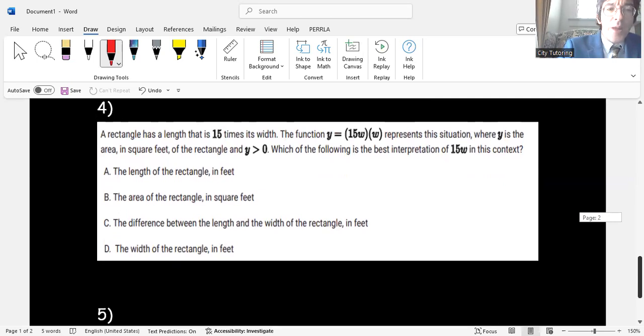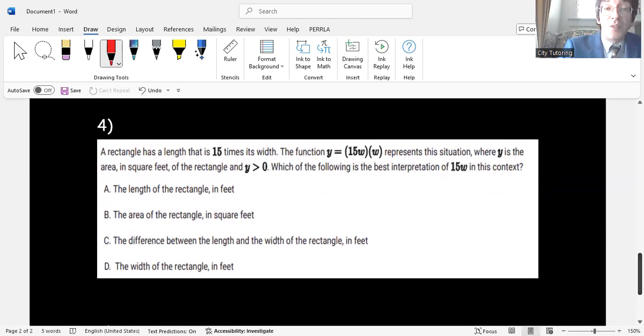Number four. A rectangle has a length that is 15 times its width. The function y = 15w times w represents the situation where y is the area in square feet of the rectangle and y is greater than zero. Which is the best interpretation of 15w in this context? You should know the area of a rectangle is length times width. This function represents L times w. They're asking how you interpret 15w. That's the length. Answer choice A. It's testing if you can use substitution and understand that relationship.